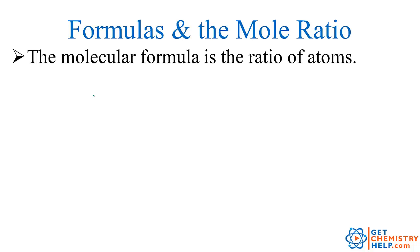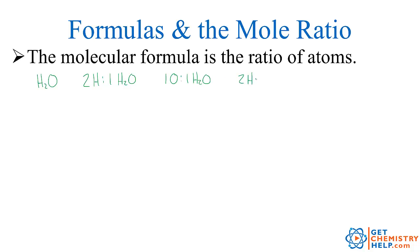The molecular formula is the ratio of atoms. For example, H2O is the molecular formula for water. That tells me there are two atoms of hydrogen for every one water, one oxygen for every one water, and two hydrogens for every one oxygen. So there are lots of ratios that I can pull out of a chemical formula.